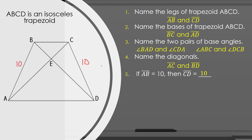Number six, if AC is equal to 15, then BD is equal to 15 as well, since we know that the diagonals of isosceles trapezoids are congruent.